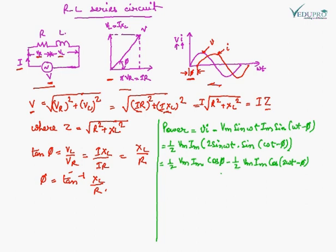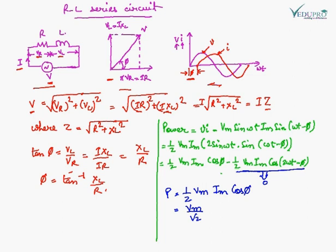For the RL circuit, the average power over the complete cycle gives zero for the sinusoidal term. Therefore, power equals half VM IM cos phi, which equals (VM upon root 2) times (IM upon root 2) times cos phi, which equals V into I cos phi. This is the power of the RL circuit.